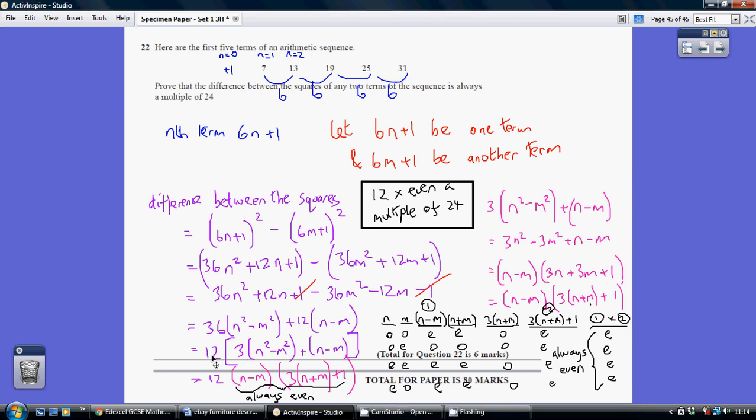OK, 12 times 2 or 12 times 4, 12 times 6, all of those would be multiples of 24. So the last two marks comes from trying to prove that this bit here is always even.